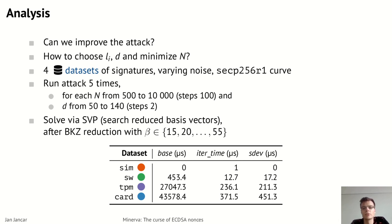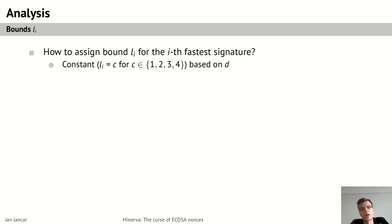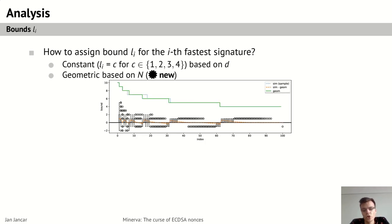The first question to tackle is that of the assignment of the bounds L_i for the i-th fastest signature. Most previous works simply used the constant for all these signatures calculated based on D essentially. We instead, however, use geometric bounds calculated based on M, which we introduced as they better approach the true distribution of leading zero bits in the fastest D signatures.